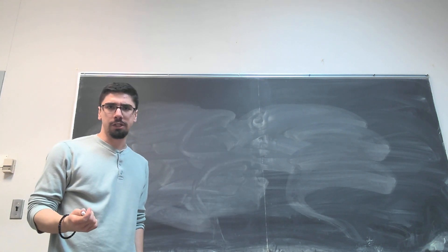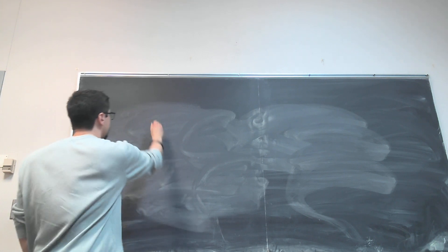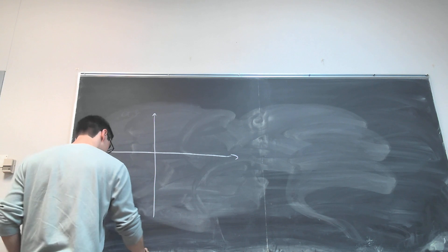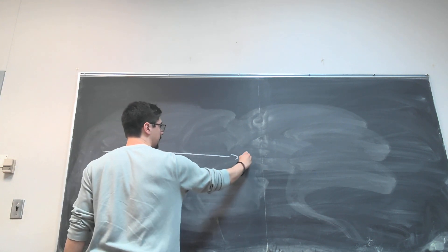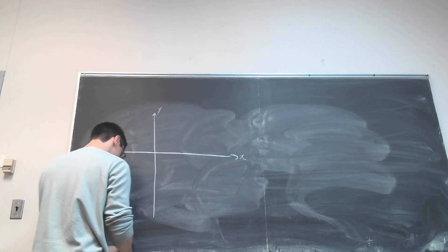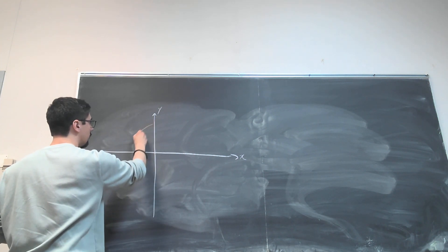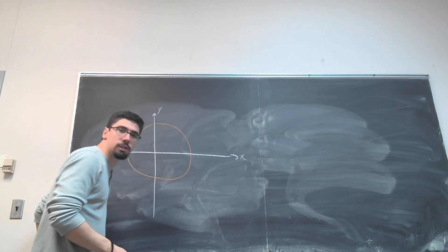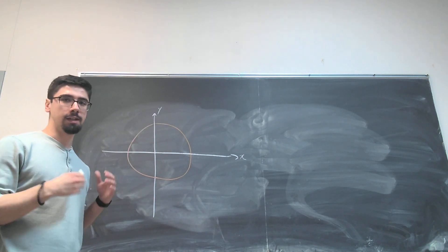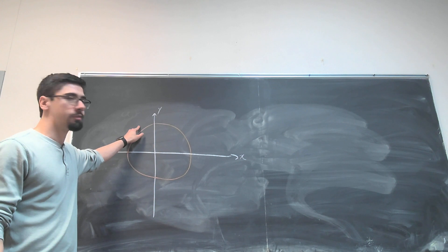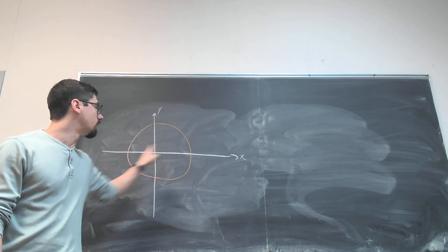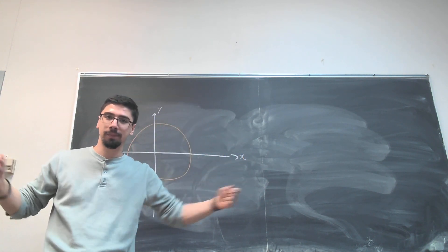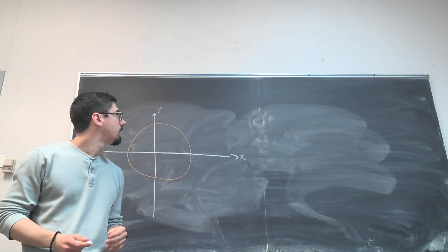So what is the stereographic projection? Well, let's look at my circle here in the plane. Here's my x-axis, my y-axis. The stereographic projection is a map that sends every point on my circle except for one to the real line. And so I am just basically unwrapping the circle after I remove a point from it.